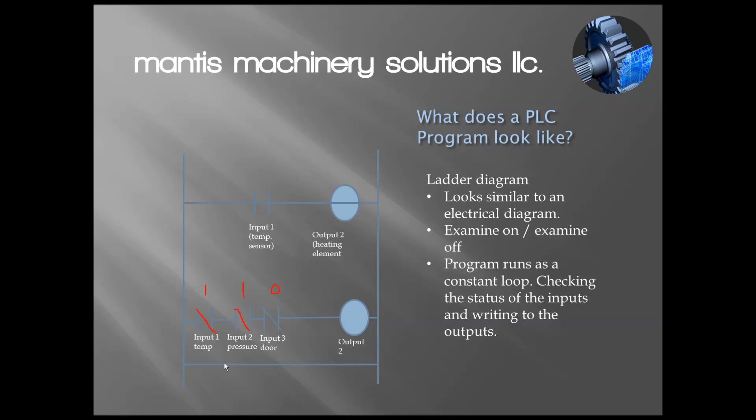I can get more complicated. Here, to produce output number two, I've added a couple extra things. Input number one would have to be made to close this, input two would have to be made to close this, and then input three would have to be not made or have a zero. So I'd be looking for a one and a one and a zero. If those three conditions are made, then I've completed my path of current and output number two turns on.